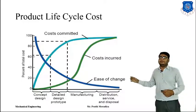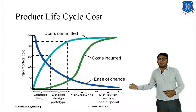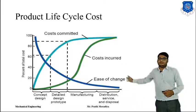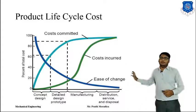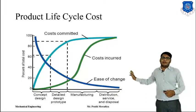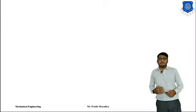That is the difference between cost committed — which is high during the design phase — and cost incurred, which is the money actually spent, occurring mainly during manufacturing. This graph shows that the product development time is the best phase for making changes to the product; after that, it becomes very hard to change.